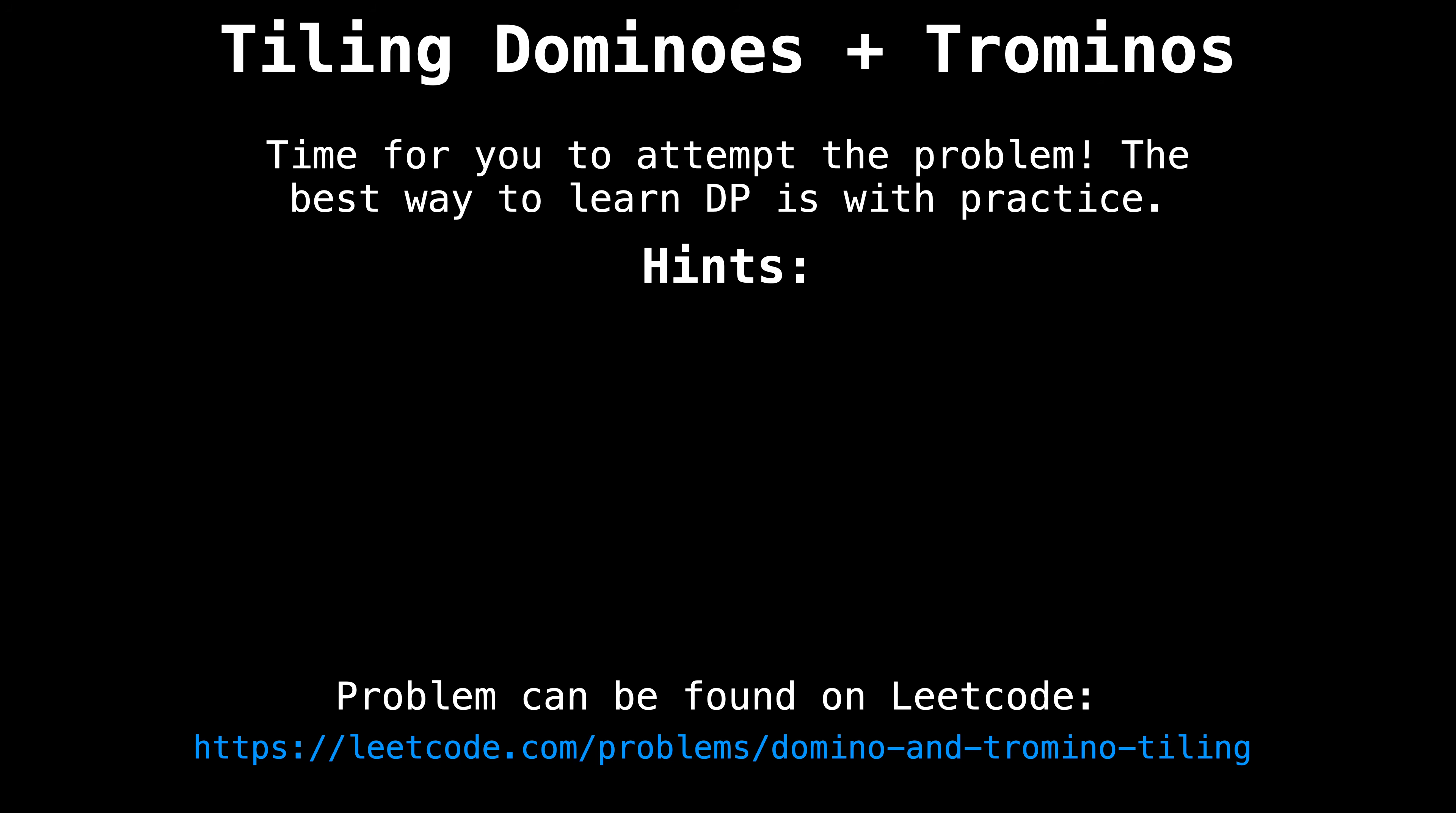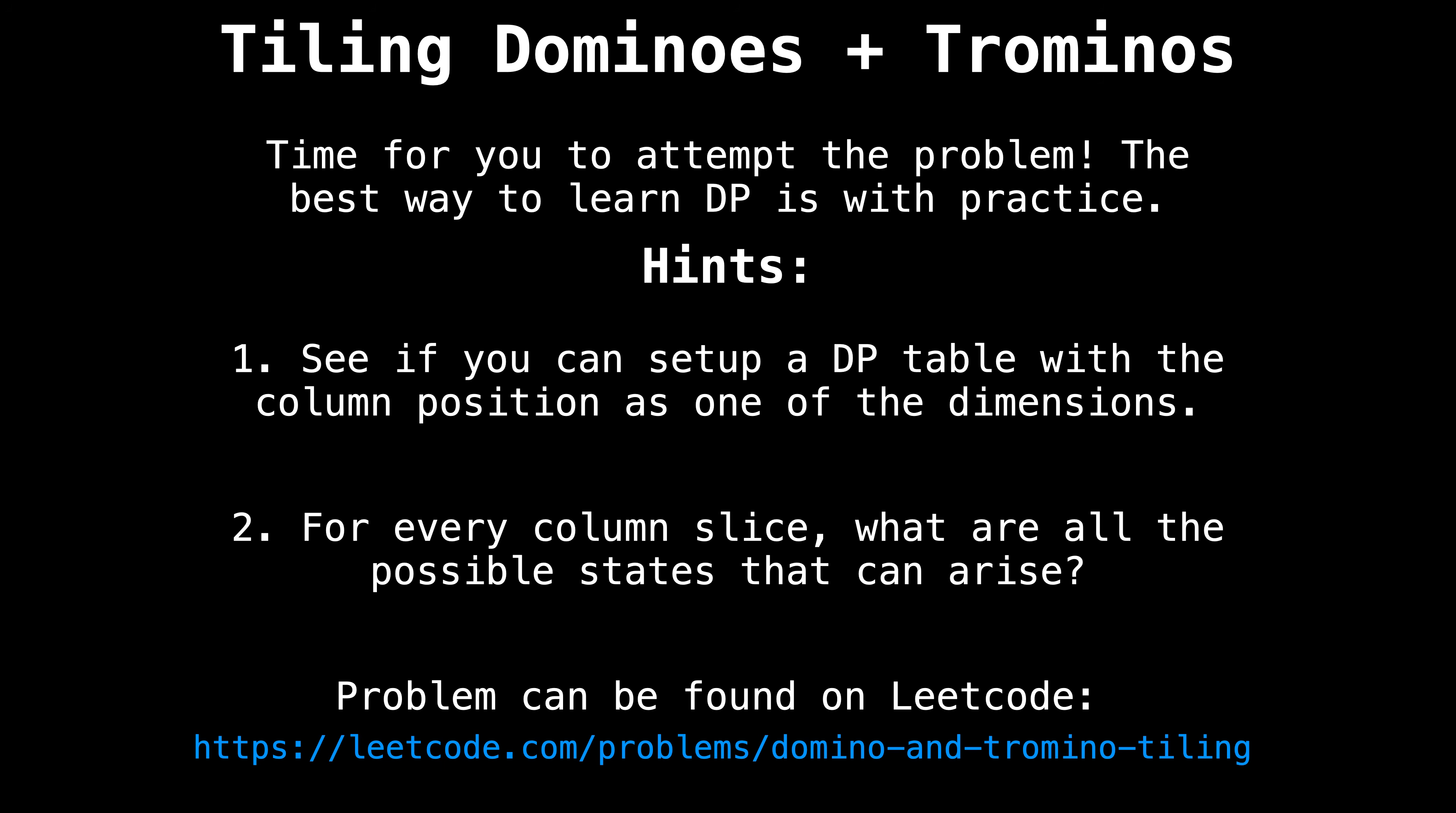You can find this problem on LeetCode with the ID domino and tromino tiling. I recommend you pause this video and attempt the problem before I reveal the solution. Remember that practice is the best way for you to get better. If you do get stuck, I have two hints that might help unblock you. My first hint is that the column index is likely one of the dimensions you might want to keep track of in your DP state. My second hint is to observe a column slice of the board and identify how many possible states can arise from that one possible slice and try and see how that can fit into the problem's solution.